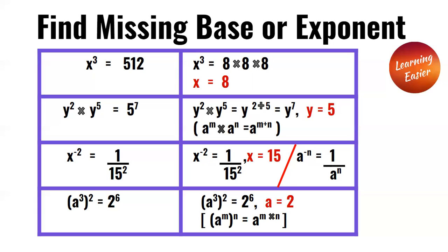x to the power of negative 2 is equal to 1 over 15 to the power of 2. X is equal to 15 because in the answer the base number is 15. Parenthesis a to the power of 3, end parenthesis, to the power of 2 is equal to 2 to the power of 6. Since in the answer 2 is the base number, a is equal to 2.